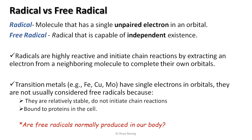A radical is a molecule that has a single unpaired electron in an orbital. A free radical is a chemical species that has an unpaired electron or a single electron in the outermost orbit and is capable of reacting. They are highly reactive molecular species with an unpaired electron — always wanting to gain or donate an electron to become stable. They persist for only a very short time, on the order of 10⁻⁹ to 10⁻¹² seconds, before colliding with another molecule to abstract or donate an electron to achieve stability.